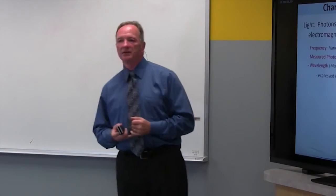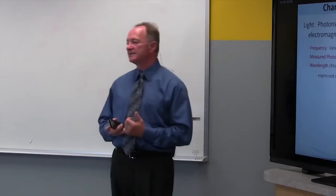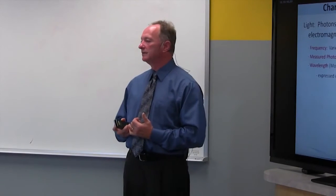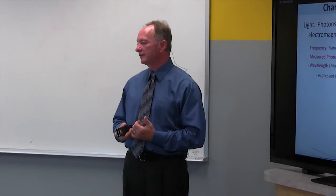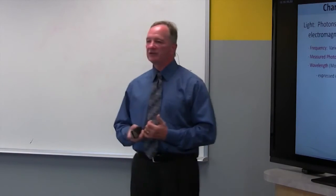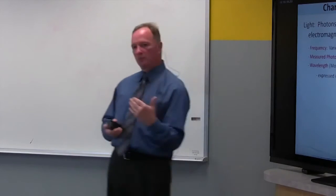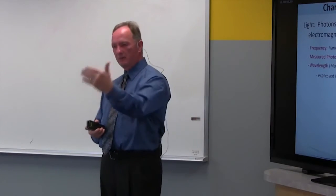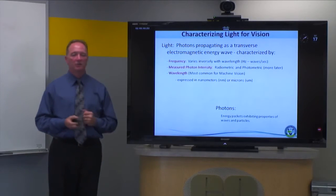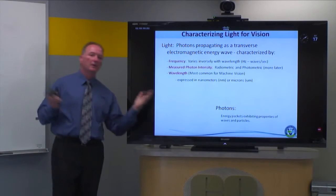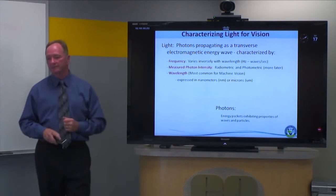In terms of machine vision, wavelength tends to be the more common characterization. We typically express those in nanometers, or sometimes in microns if you're working with thermal IR — since those wavelengths are much longer, microns makes more sense than saying 21,000 nanometers. Incidentally, areas highlighted in red in the slides are important concepts to remember.